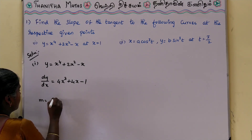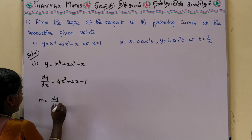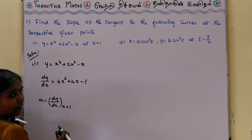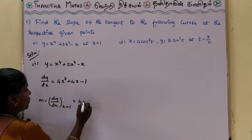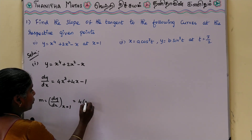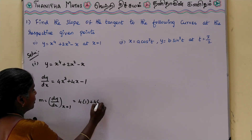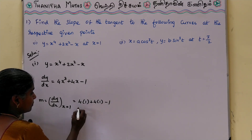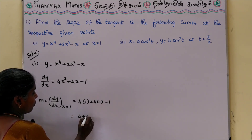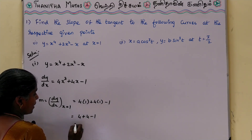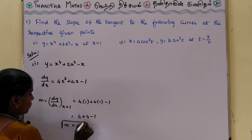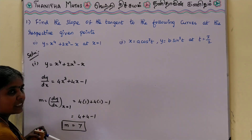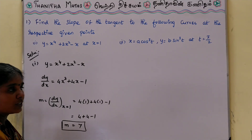Now, M is equal to dy by dx at x is equal to 1. Substitute the x value: 4 into 1 cube, plus 4 into 1, minus 1. So, 4 plus 4 minus 1 equals 8 minus 1, which gives 7. Therefore, M is equal to 7. That is the answer for the first sum.